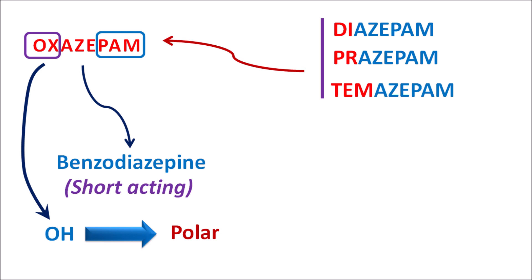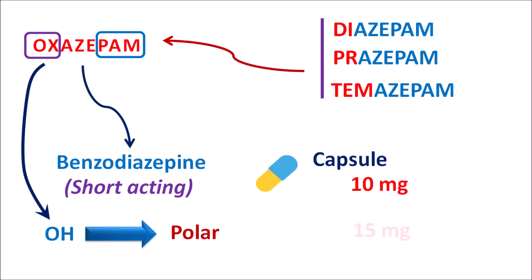Even though Oxegepom is a metabolite of long-acting benzodiazepines, this drug is still active and can be used in the treatment of anxiety disorders. This drug is available as a capsule form at different strengths such as 10 mg, 15 mg and 30 mg.